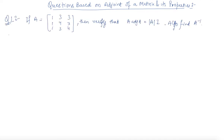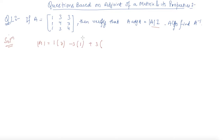Here is the question that is given to us. We are given a matrix A and we need to verify whether A·adjoint(A) equals |A| times I. So first I will find out the value of mod A, which will be 1 into 16 minus 9, that is 7, minus 3 times 4 minus 3, that is 1, plus 3 times 3 minus 4. So this is 7 minus 3 minus 3, which equals 1. So it is a non-singular matrix.